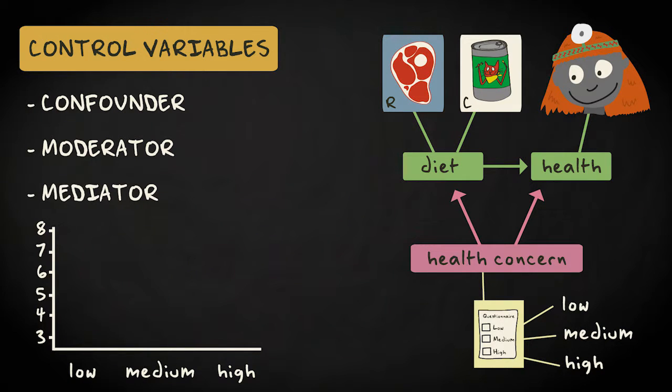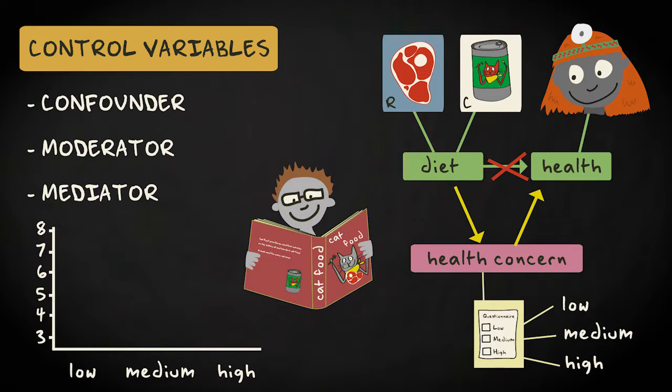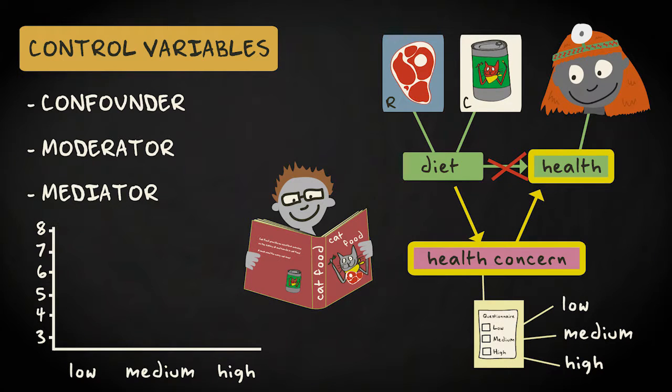Thirdly, health concern can mediate the relation between diet and health, meaning diet does not influence health directly, but only indirectly through health concern. The example is a bit far-fetched here, but feeding a raw meat diet requires owners to educate themselves about food preparation and portioning. This might lead owners to become more concerned with their cat's health, leading to other changes such as portion control and more visits to the vet, which are in fact responsible for an increase in cat health. Diet influences health indirectly through the intermediate variable health concern.